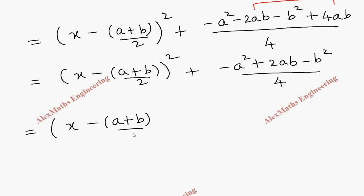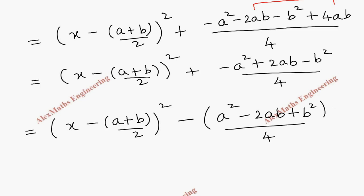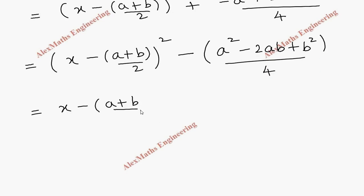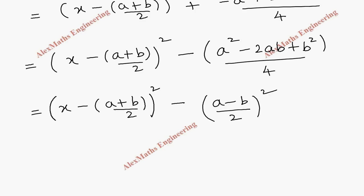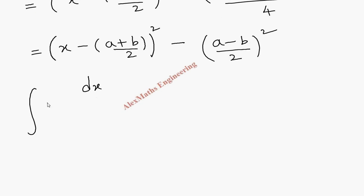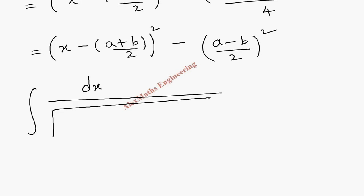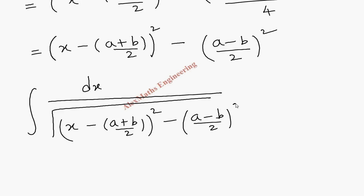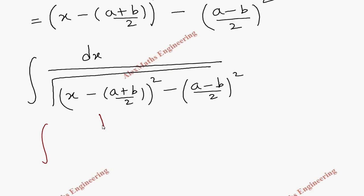Taking minus common, the numerator a² − 2ab + b² = (a − b)², and denominator 4 = 2². So we write (a − b)/2 whole square. The completing square form is therefore (x − (a+b)/2)² − ((a−b)/2)². Writing this inside the root in the original integral gives root of (x − (a+b)/2)² − ((a−b)/2)².